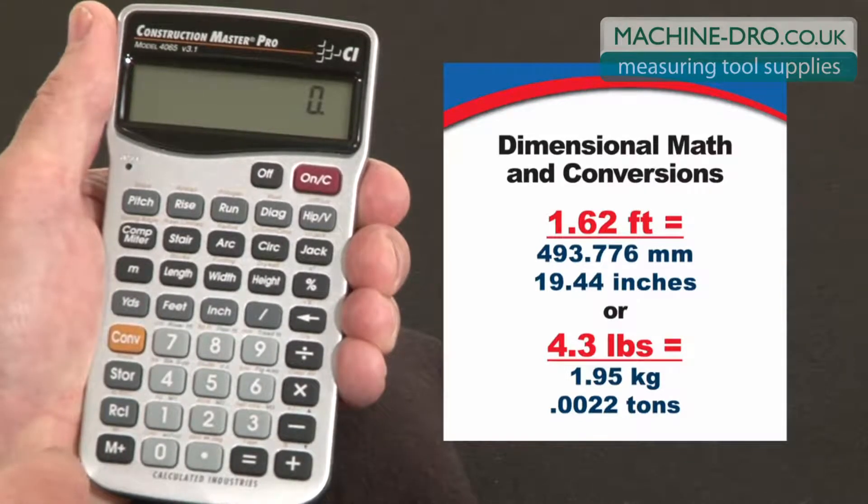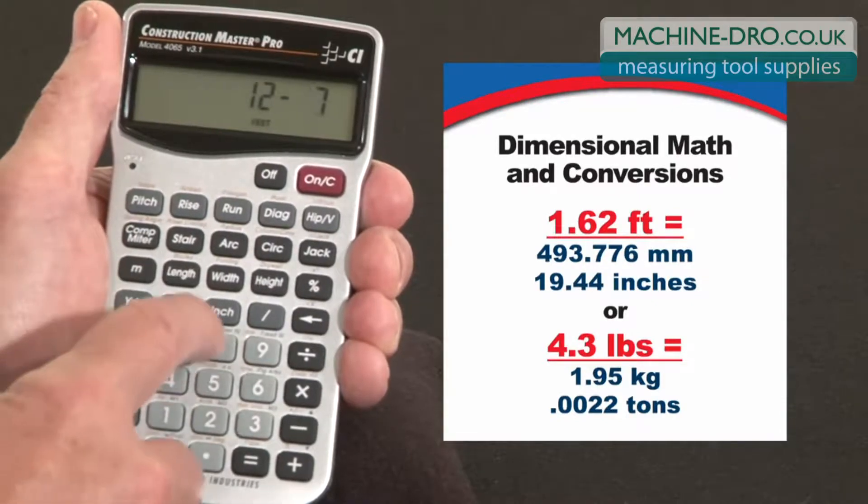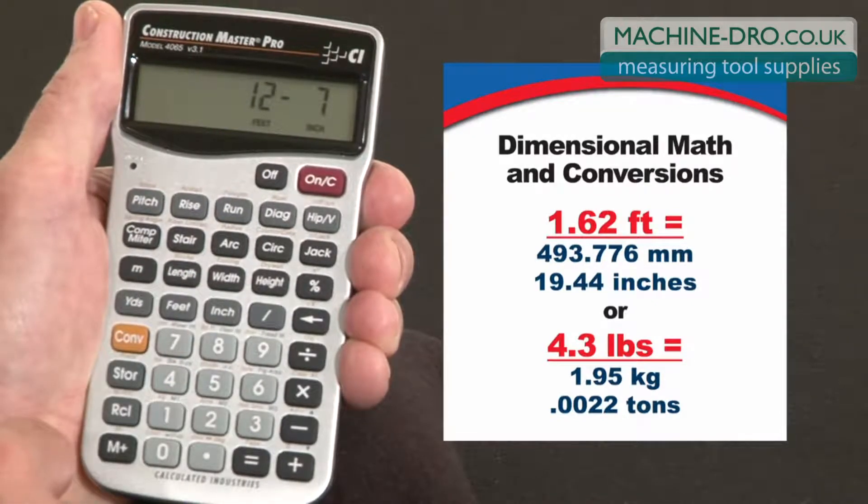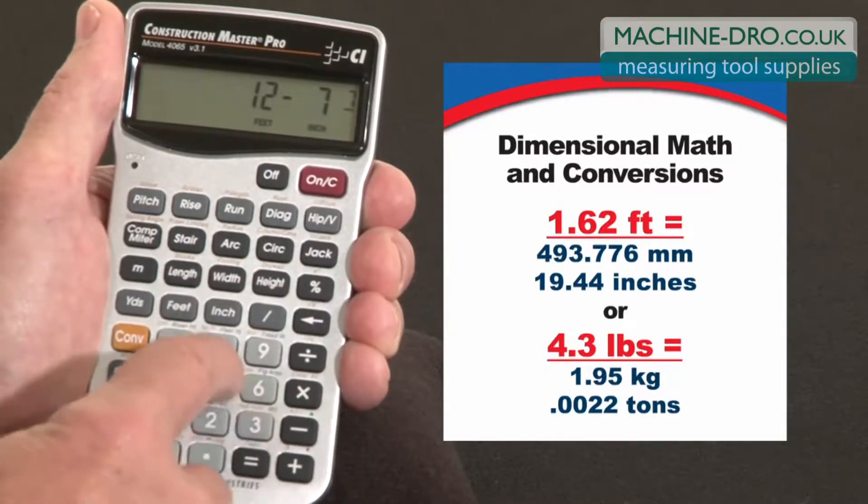Pretty much you put in dimensions the way you say them. Put in the number and then label it. 12 feet, 7 inches, and any fractions down to 64ths of an inch. Just the way you write it, 7 slash 8ths.